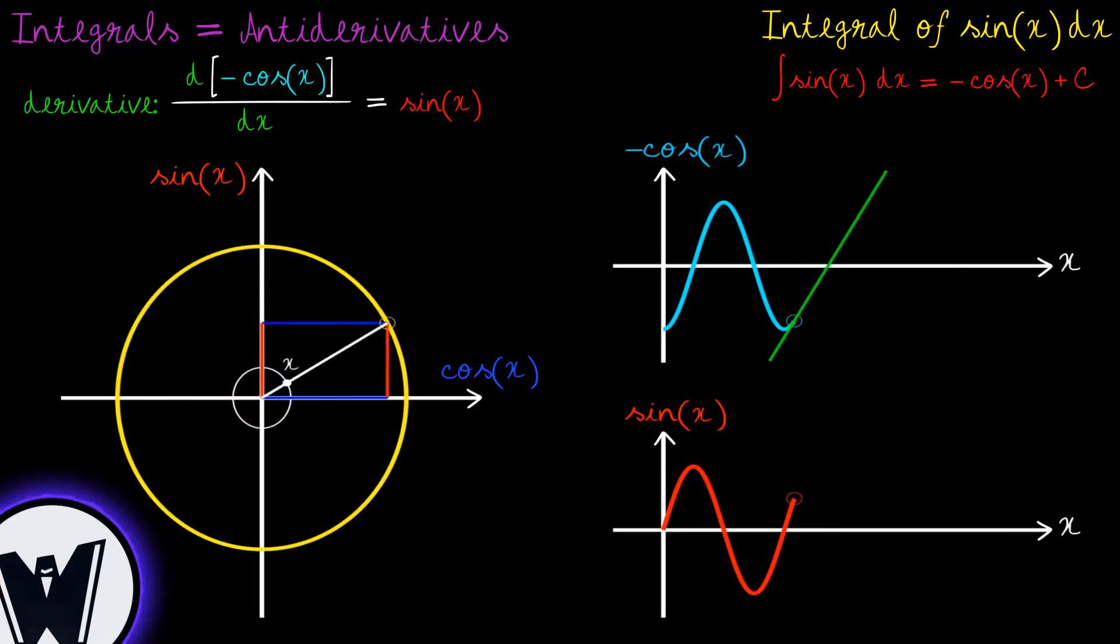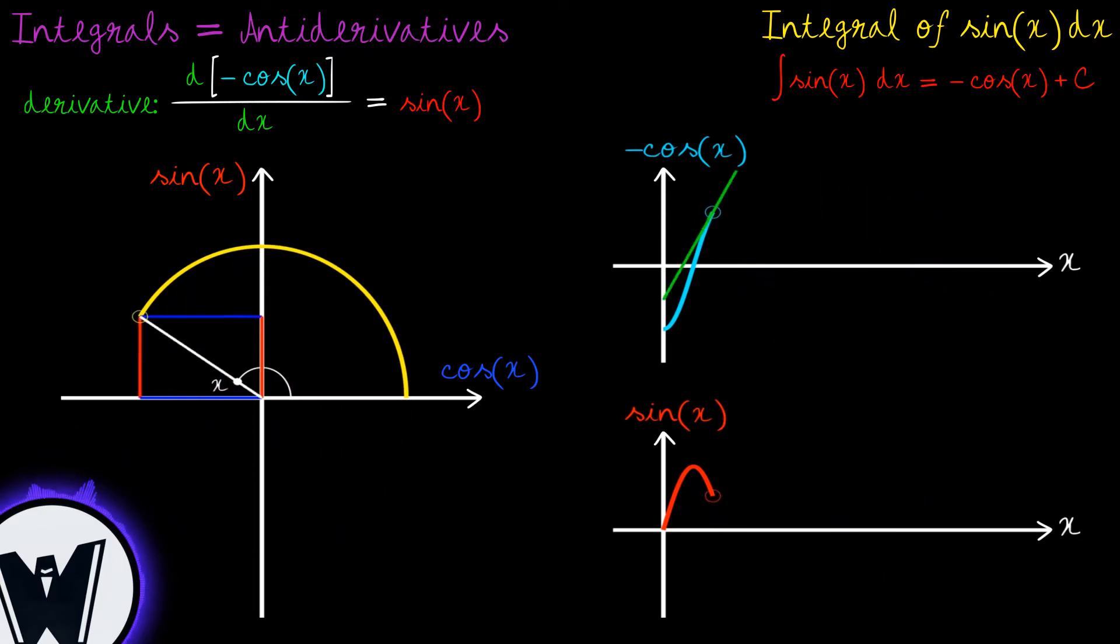We can see that for x equal to 0, our slope is parallel to the x axis, meaning that the function negative cosine is constant. It does not change in this particular point. If there is no change, the derivative is 0. Something we can verify on the graph of sine of x that initiates in 0.